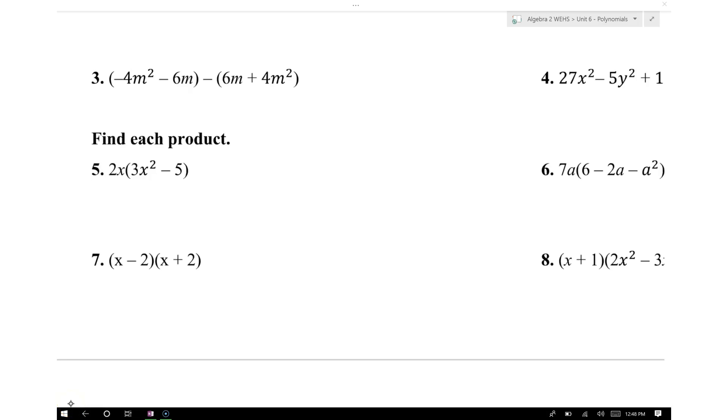I'm going to simplify problem three. The polynomial that we have is negative 4m squared minus 6m. Notice that we have the minus here. That minus is going to give us the opposite value for this polynomial.